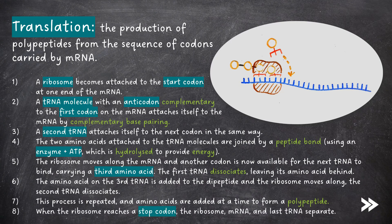When the ribosome reaches a stop codon, the ribosome, mRNA and the last tRNA separate. The polypeptide chain is now complete.